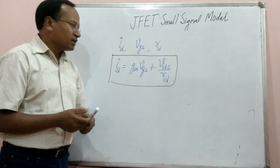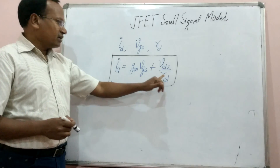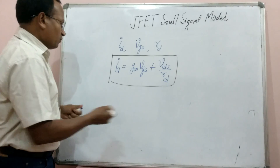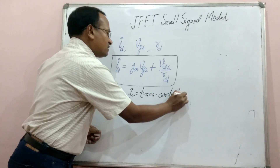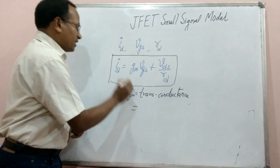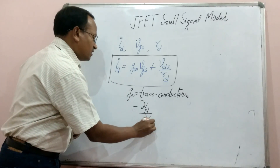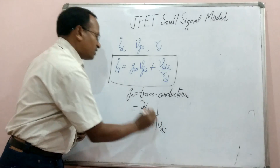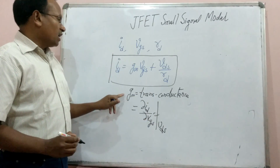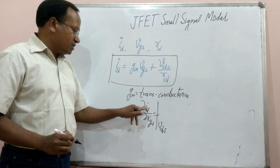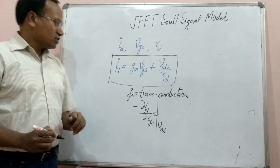The drain current due to VDS is VDS divided by RD, where RD is the drain resistance. GM we call transconductance. To find the expression for GM, we write: GM = ΔID/ΔVGS keeping VDS constant. This is output current divided by input voltage — current divided by voltage — so it is called transconductance. The unit of GM is milliampere per volt or microampere per volt.